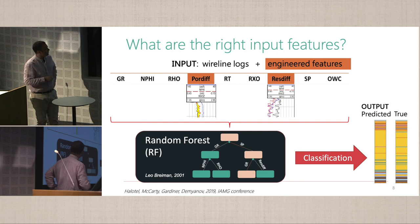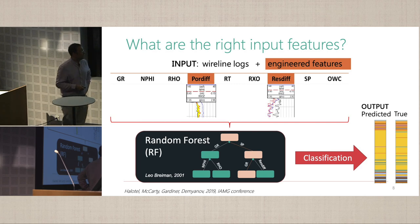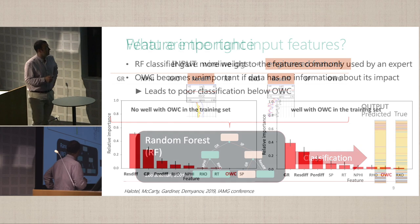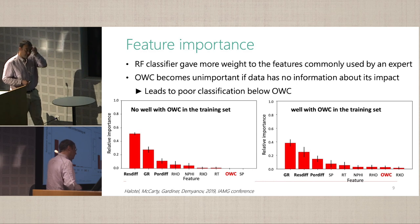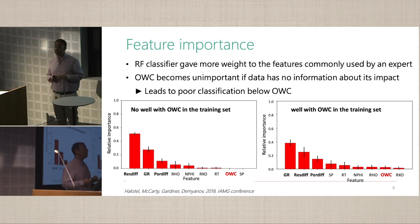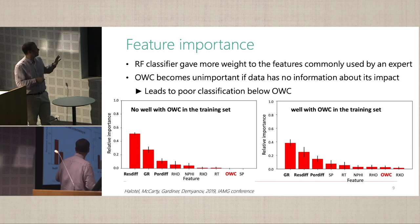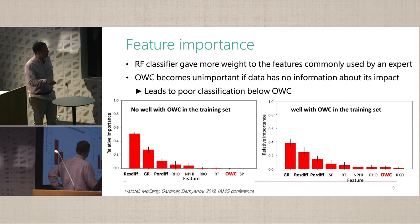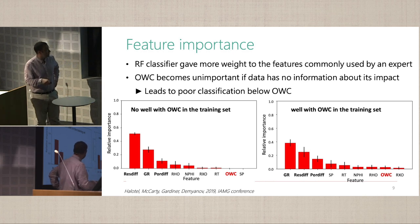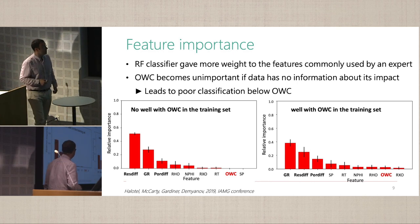We added those engineered features into a random forest classifier, and got pretty spot-on predictions, with some bits misclassified. What I want to highlight is the feature importance, because random forest is a tree-based classifier. The three most important features were gamma ray and those engineered features — resistivity and porosity difference — which are what petrophysicists would guide their interpretation on. So it looks like the random forest follows this logic.